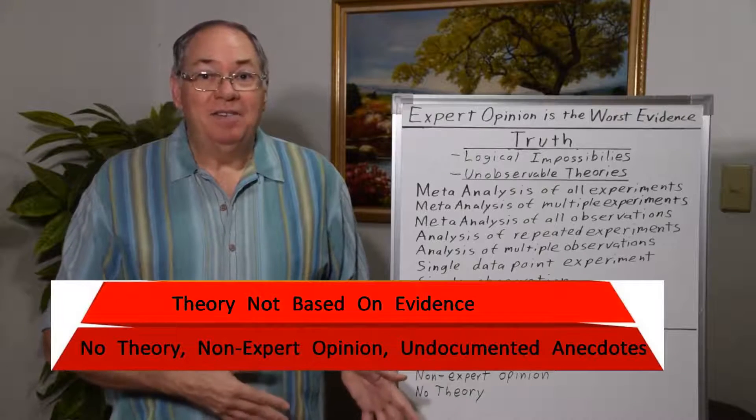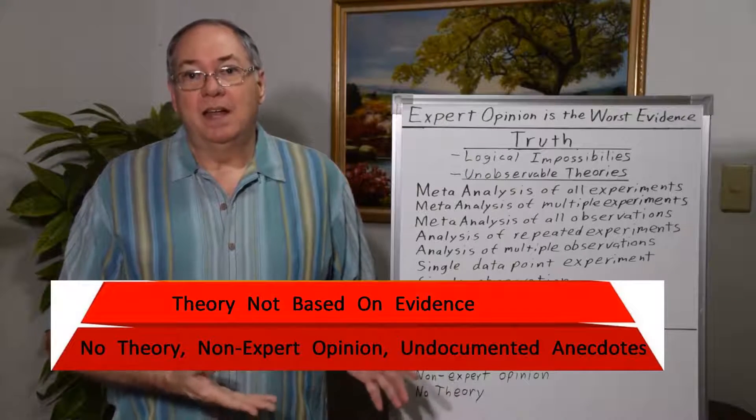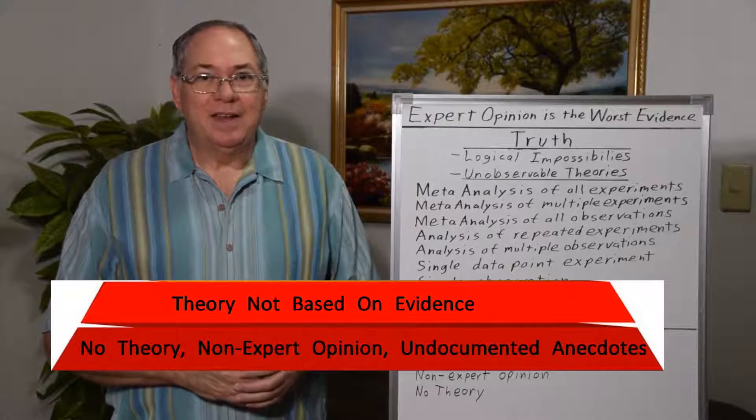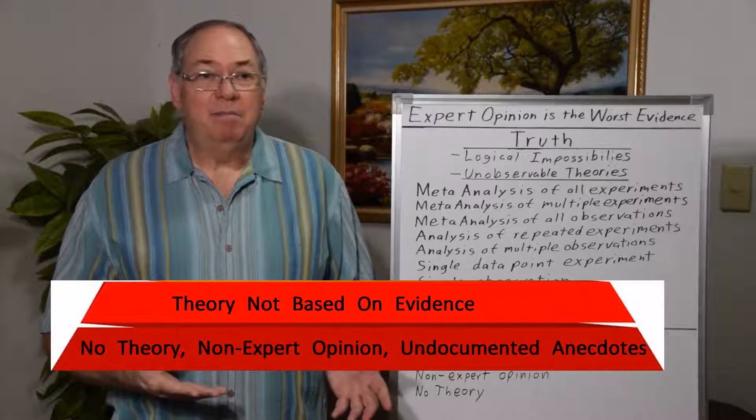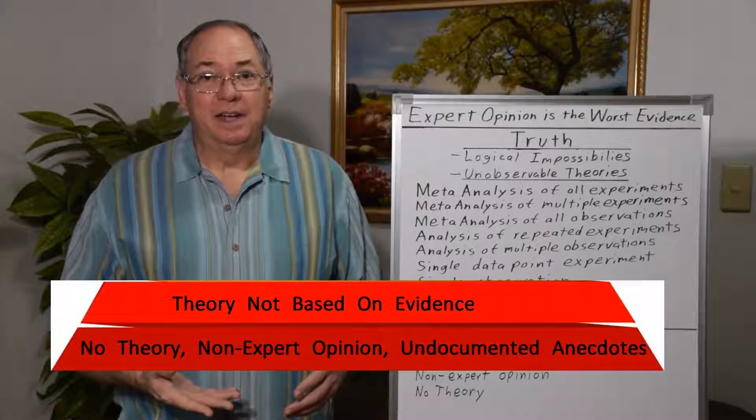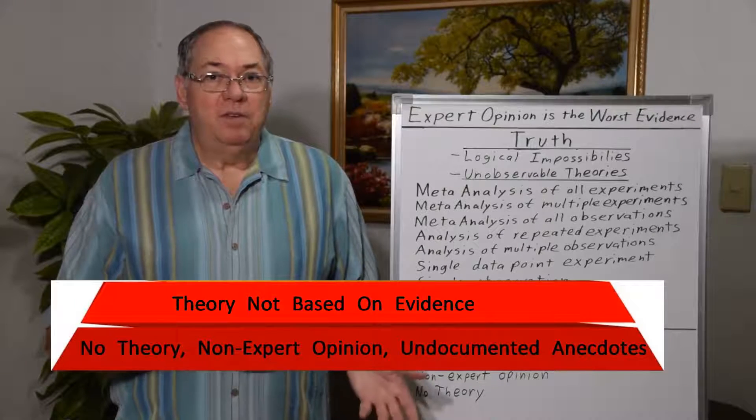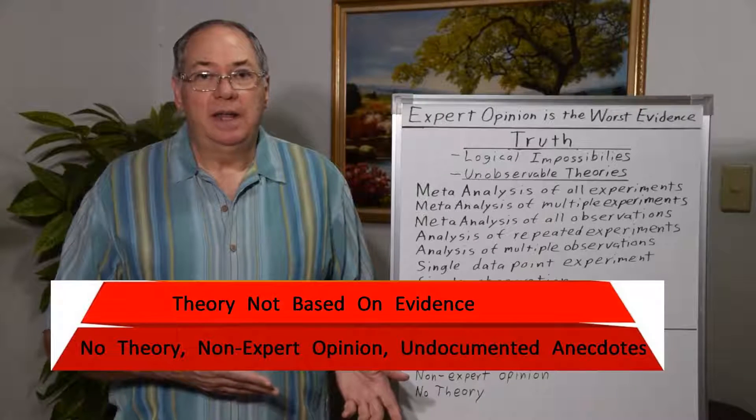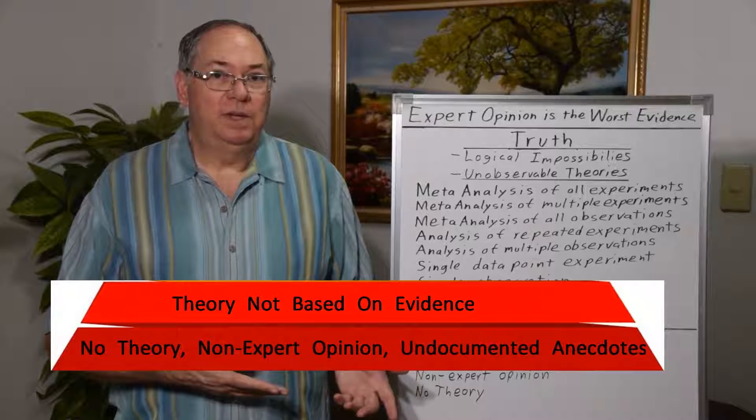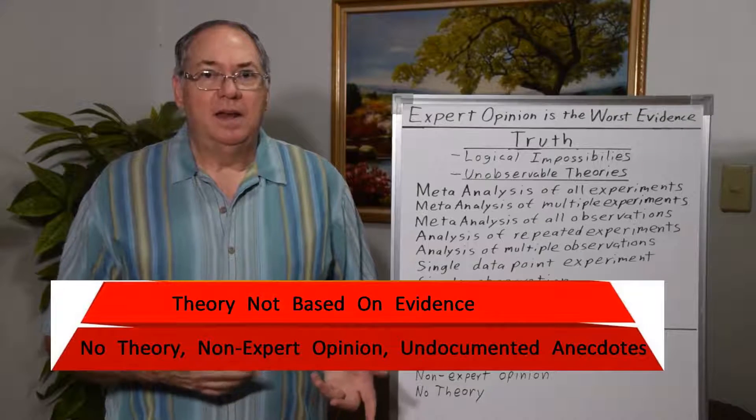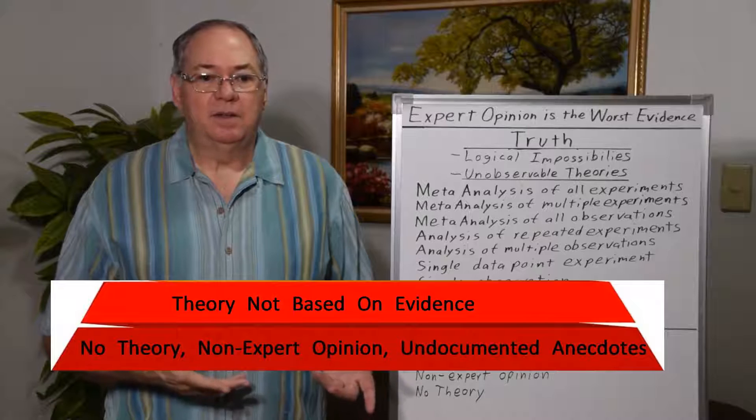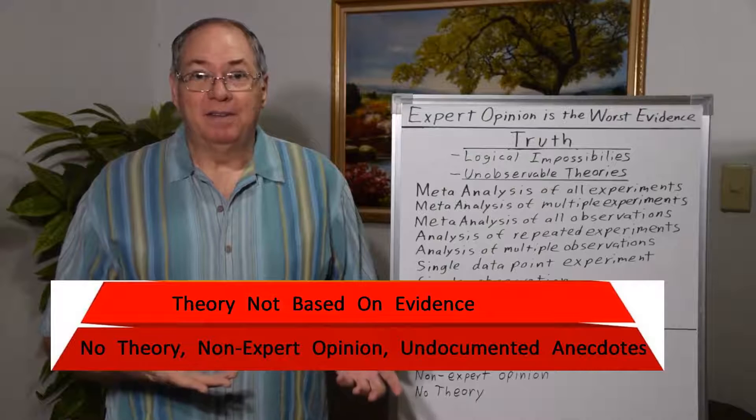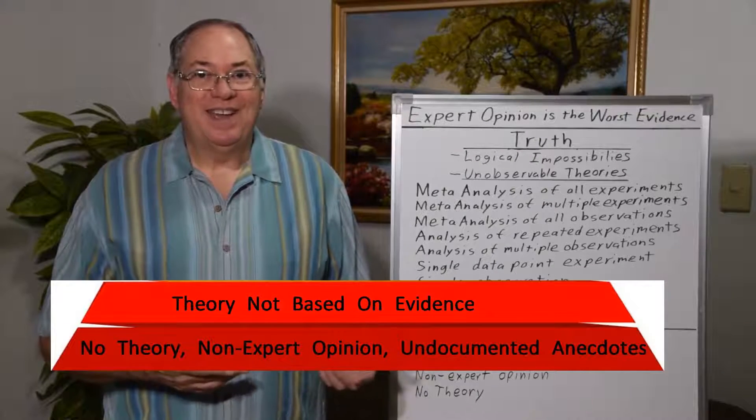Next in the non-evident section, I put non-expert opinion. Of course, what do you mean by expert? In academia, they might say PhD, but that's an appeal to authority, a logical fallacy. If you took away all of academia's fallacious appeals to authority, then they wouldn't have any way to know who is an expert. And then another non-evident is undocumented anecdotes.